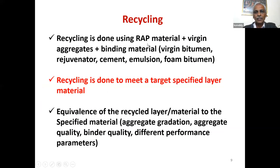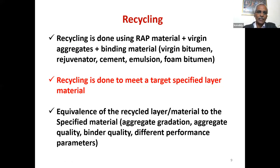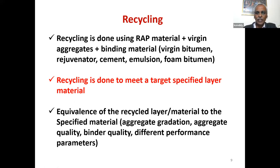Recycling basically means we use RAP material. You will definitely have to add some virgin aggregates and some binding material depending on where you are using it and in which mode — hot or cold condition — whether it is virgin bitumen plus rejuvenator or without rejuvenator, sometimes cement if using emulsion, and also foam bitumen. The current practice in most agencies is that you have a target layer — you are trying to replace DBM1, DBM2, BC1, or BC2 — and you have to produce a material which satisfies all the requirements of that layer, including binder properties, aggregate properties, and mix properties.